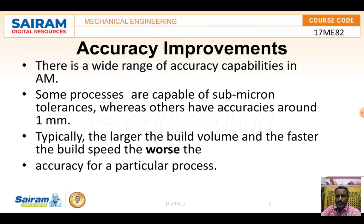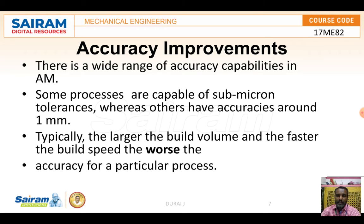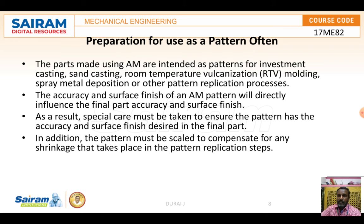This covers surface texture improvement. Moving on to accuracy improvement: accuracy is normally given in terms of sub-micron levels. Some heavy components are provided with an accuracy of only one millimeter, while the remaining materials are normally provided accuracy at the micron level only. Larger build volumes and faster build speeds affect the accuracy for a particular process.